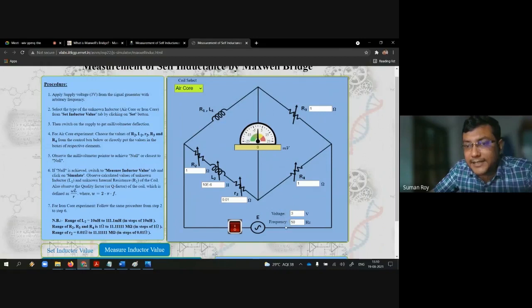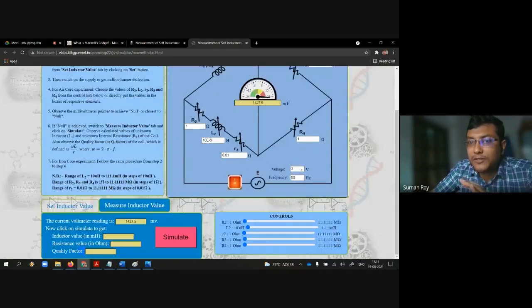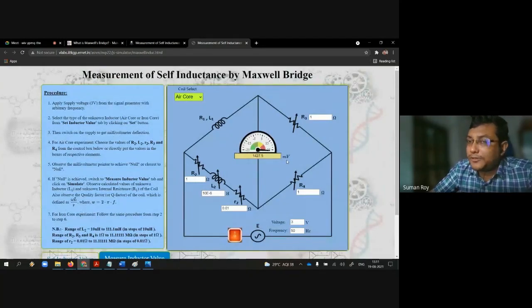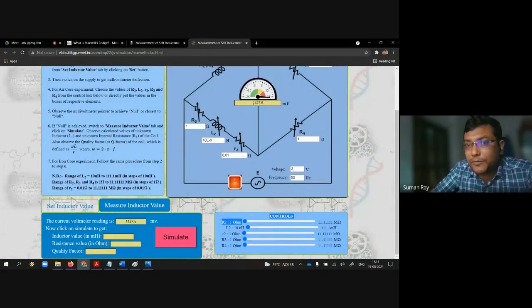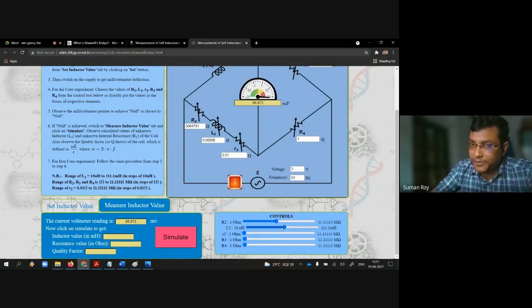After setting 3 volts and 50 hertz and all those settings, you have to just switch on the circuit. Now it is turned on and you can see initially it deflects to 1427 millivolt. You have to change this value. For example, if I change this value, see it is drastically changing. From 1427, if I increase the R2 value a bit, it becomes 68.870.